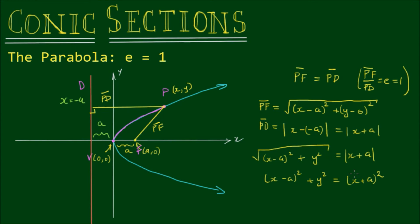So therefore the absolute value of (x + a)² is simply equal to (x + a)². So what I'll do now is I'll expand these binomially. So (x - a) expands to x² - 2xa + a². And then we have + y². (x + a)² expands to x² + 2xa + a².